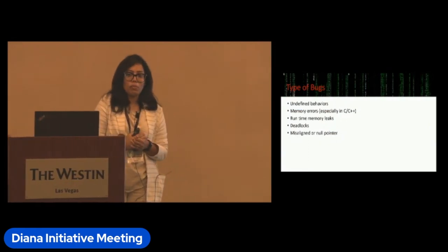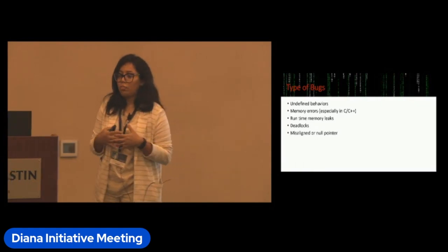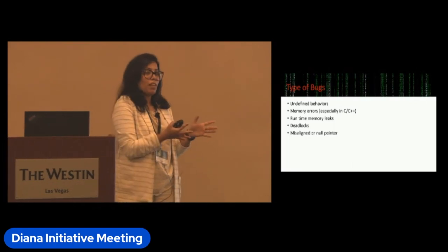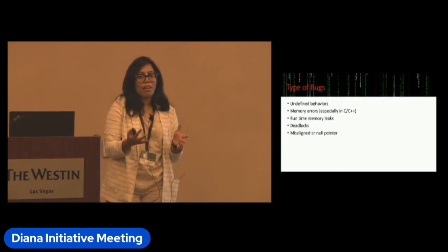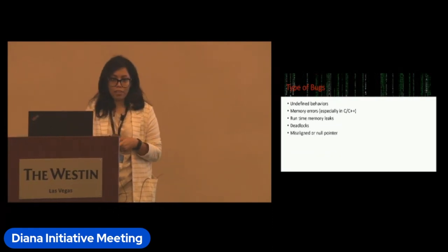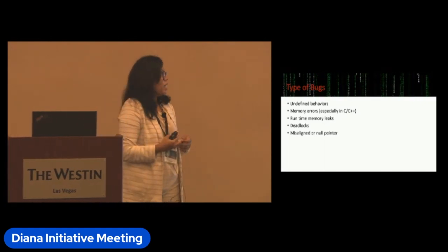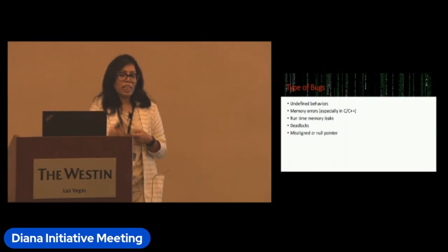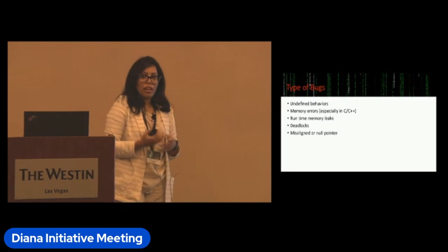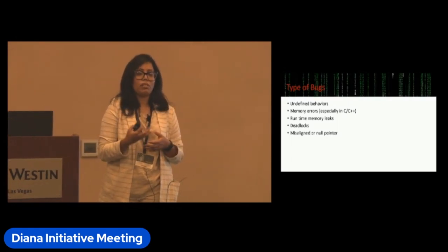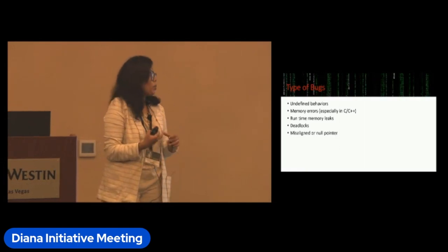What kind of bugs can we find using fuzzing? We can find different types of memory errors like stack overflow, buffer overflow, heap overflow, memory corruption, and uninitialized reads — especially memory safety and type safety bugs in C and C++ codebases. Fuzzing is not just for C and C++; we can apply it to other languages like Python and Go. Beyond memory management issues, fuzzing can also help identify deadlocks, null pointers, undefined behaviors, and runtime memory leaks. Fuzzing cannot detect logical issues, but apart from those it can detect almost all other bugs.